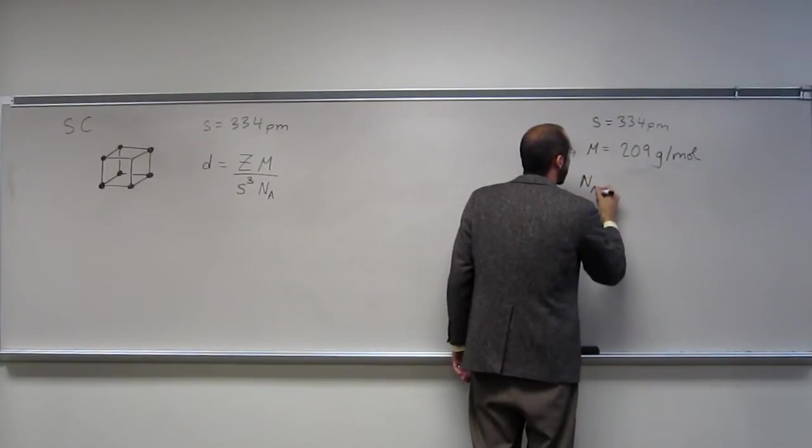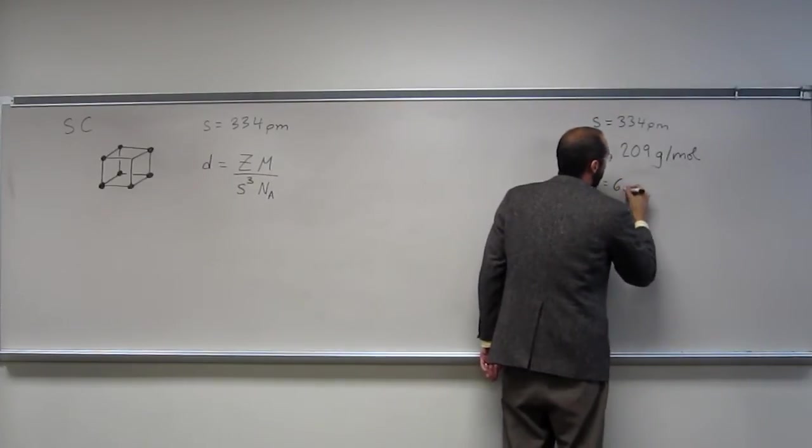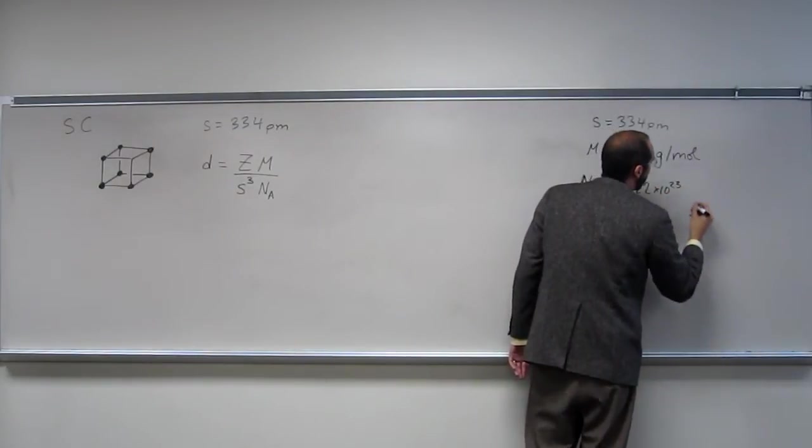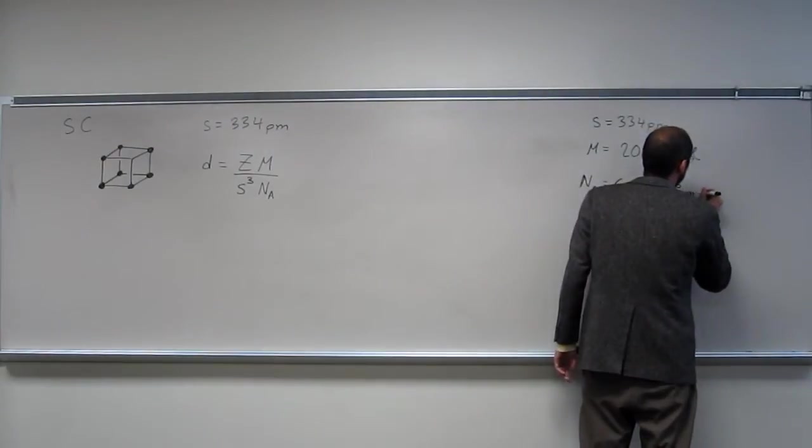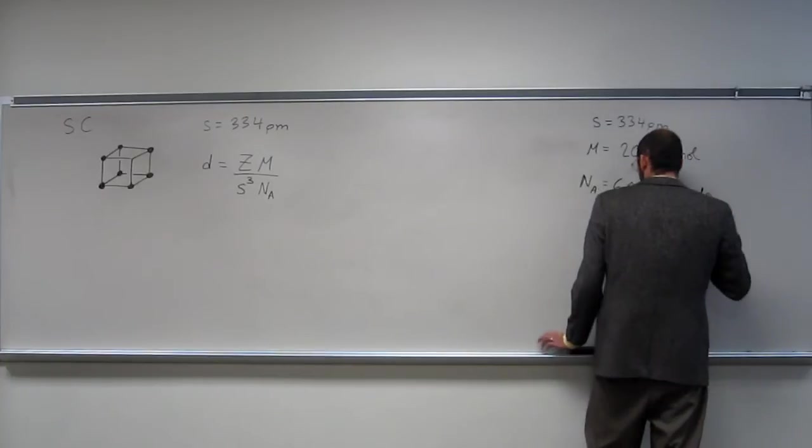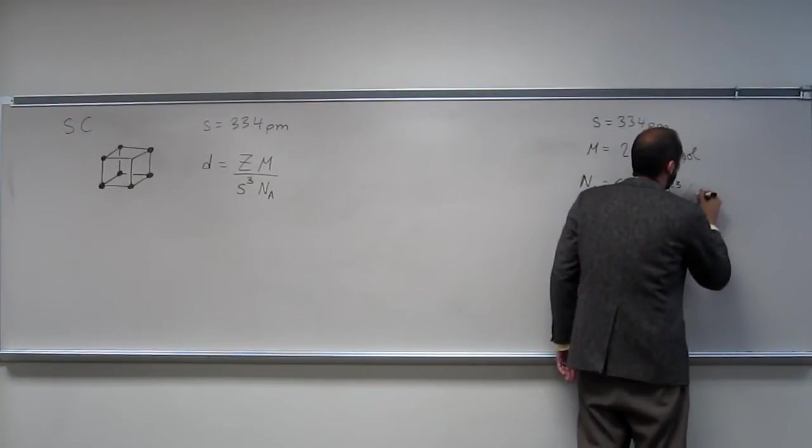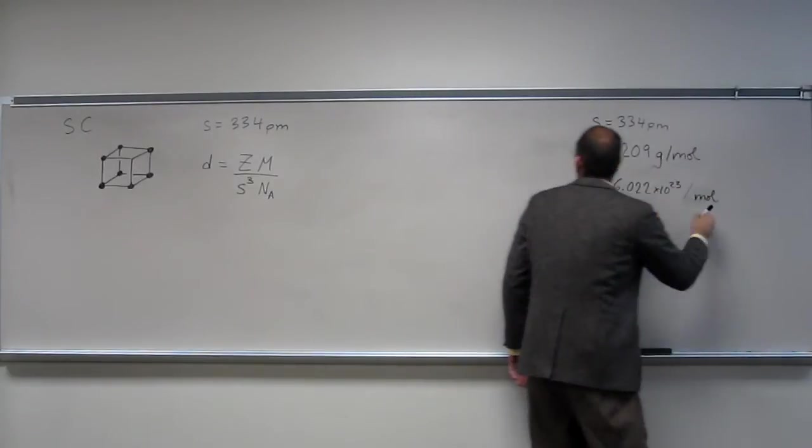Grams per mole. Of course, Avogadro's number, 6.022 times 10 to the 23rd molecules. Or, in this case, atoms. Atoms per mole. Let's just say that, just per mole.